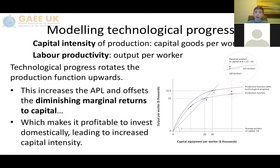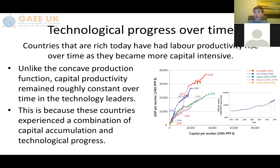When modelling technological progress, there are two consistent variables of measurement to look at: capital intensity of production and labour productivity. Technological progress rotates the production function upwards. This increases the APL and offsets the diminishing marginal returns to capital, which makes it profitable to invest domestically, leading to increased capital intensity. Countries that are rich today have had labour productivity rise over time as they become more capital intensive. Unlike the concave production function, capital productivity remained roughly constant over time in the technology leaders, because these countries experienced a combination of capital accumulation and technological progress.